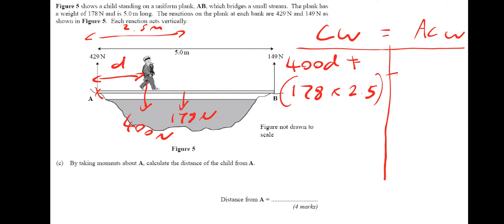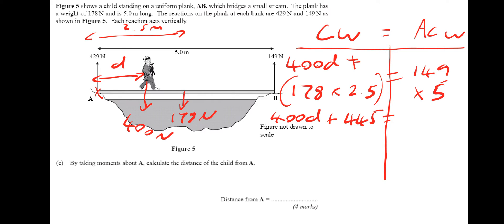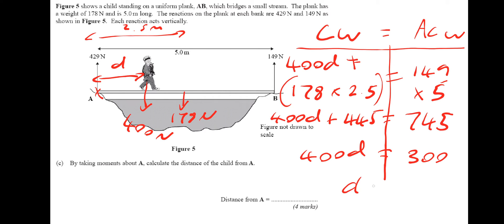So 400D plus 178 times 2.5 — which is 445 — equals 149 times 5, which is 745. Then we make D the subject: 745 minus 445 gives 300 on this side, and we have 400D. So D equals 300 divided by 400, which is three quarters. Therefore D is 0.75 metres.